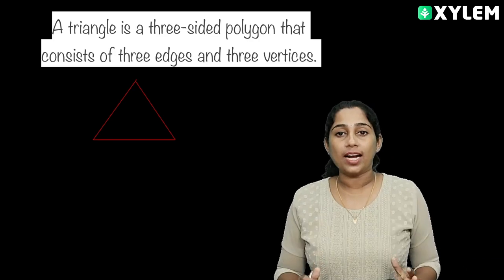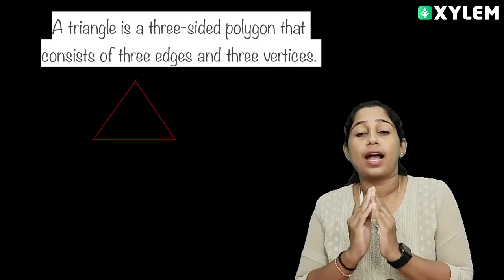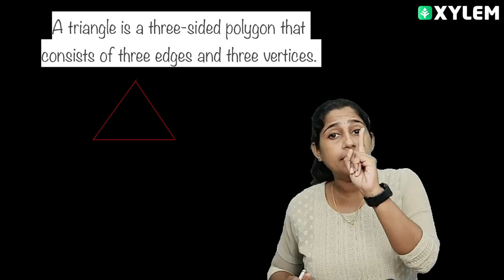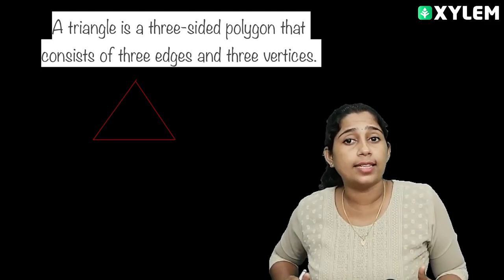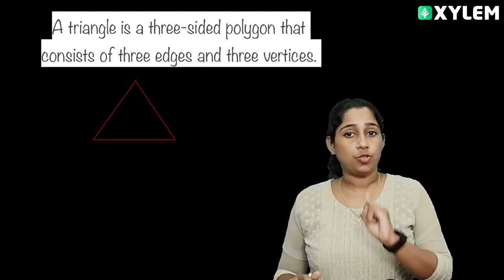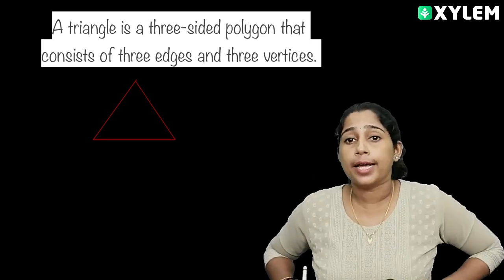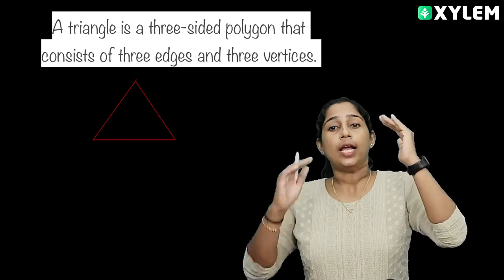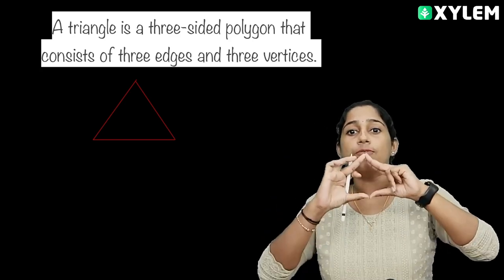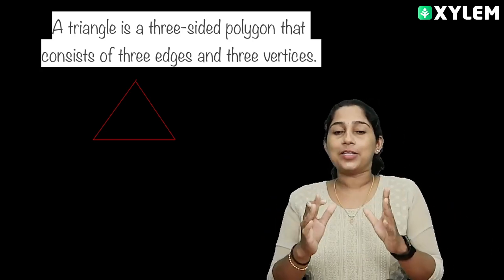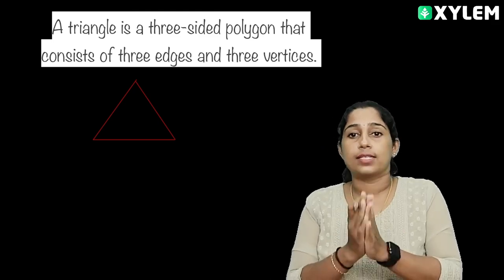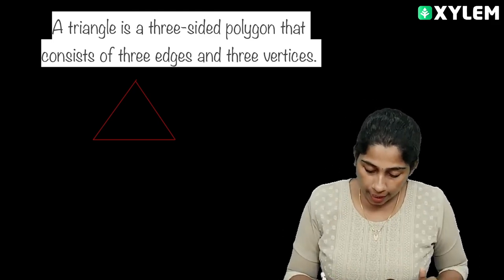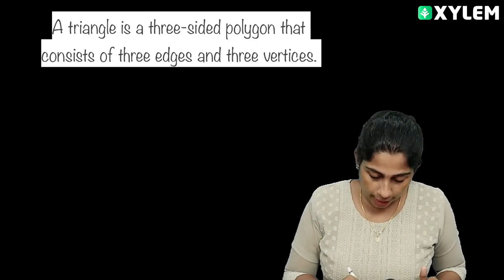Now, what kind of triangle is this? Triangle. What is the first polygon? What is the triangle? Because it is a closed figure made up of straight lines. So what is the triangle? It is the first polygon.